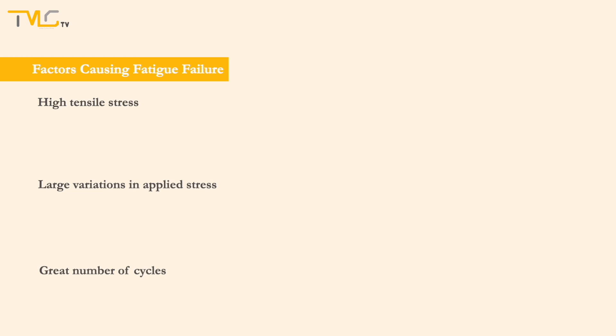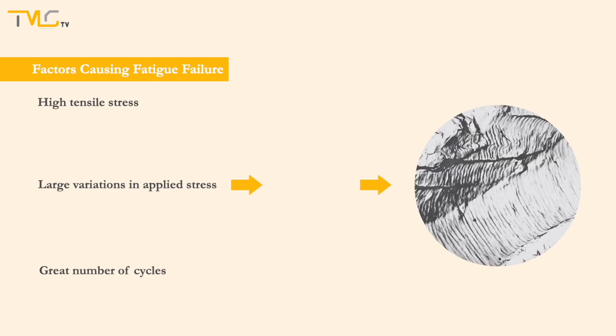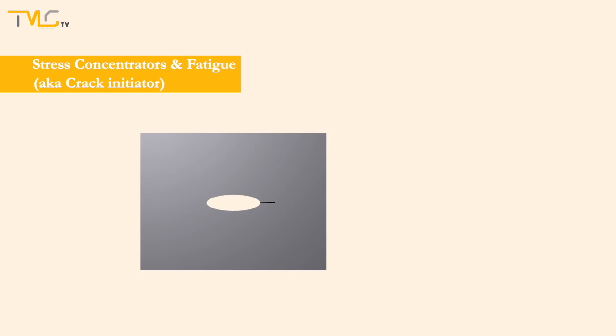Fatigue fracture occurs at three main steps, namely, crack initiation, crack propagation, and final sudden fracture. Fatigue cracks always initiate at stress concentration points, also called as crack initiators. Local stresses at crack initiation sites are considerably higher than nominal stress.